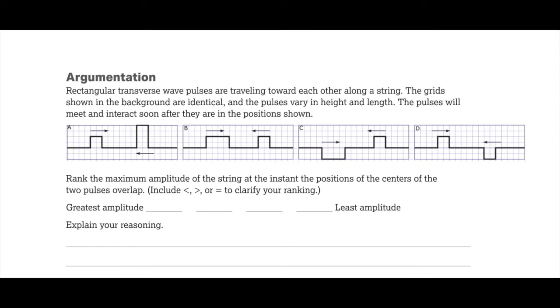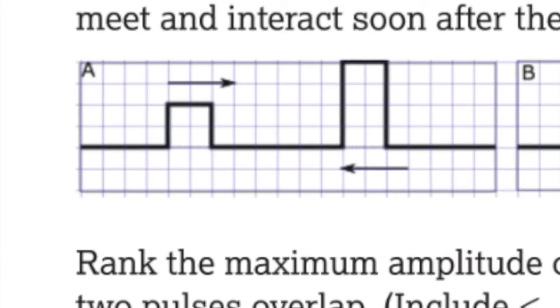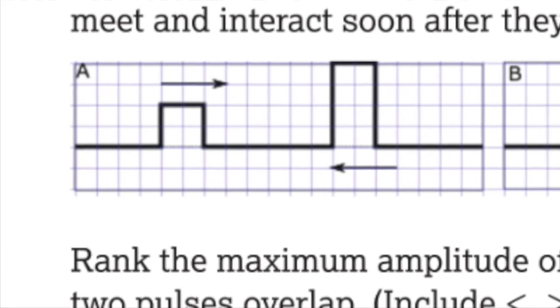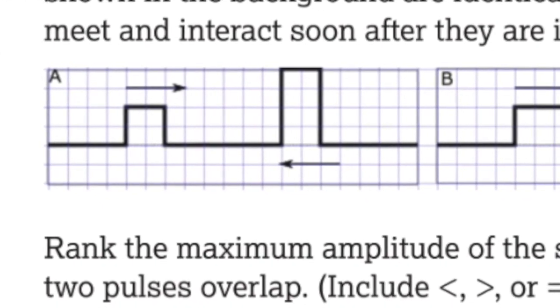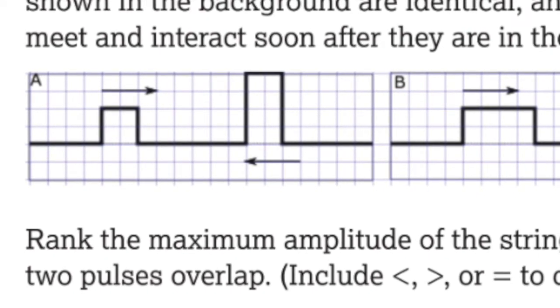Argumentation. Rectangular transverse wave pulses are traveling toward each other along a string. The grids shown in the background are identical, and the pulses vary in height and length. The pulses will meet and interact soon after they are in the position shown. After we practiced what we did, we now have four new scenarios that you can see in the picture. It says, rank the maximum amplitude of the string at the instant the positions of the centers of the two pulses overlap.